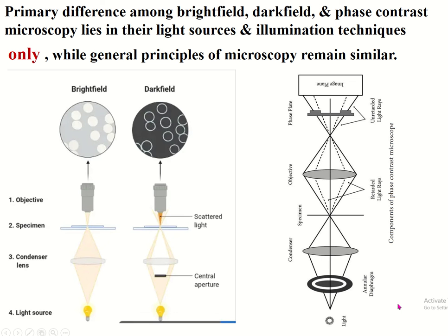In phase contrast microscopy, only the intermediate portion is transparent and the peripheral and central portions are covered by a non-transparent object, so only that intermediate portion of the light passes through the condenser lens.